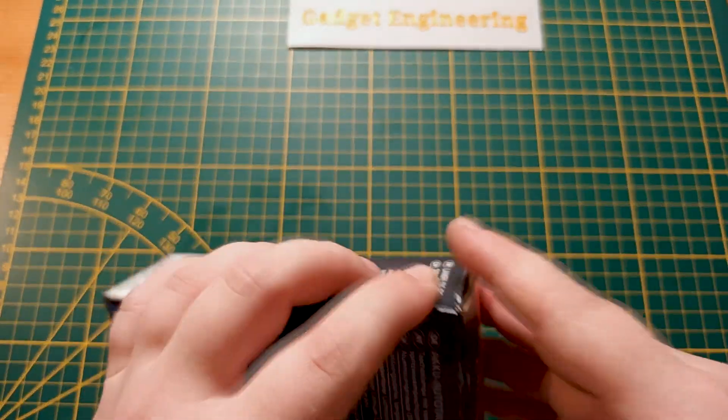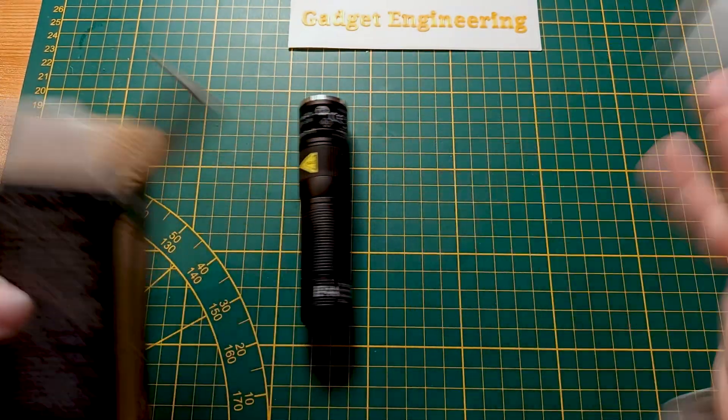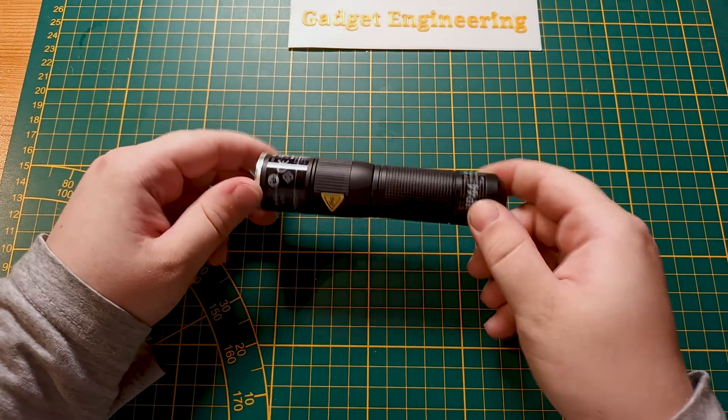So if we can have a look inside, we can see included is the torch itself and a manual. You can get rid of those. And this is the torch in question itself.